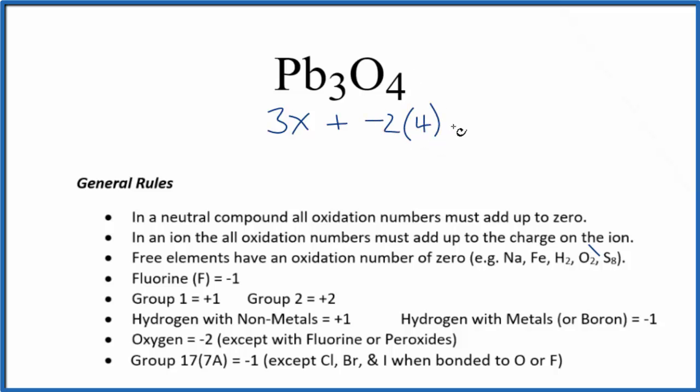So we'll have three lead, so 3x, plus oxygen - each one is minus 2, we have four of them - and we said all of that would equal zero since it's a neutral compound. So 3x minus 8 equals 0. Add 8 to both sides, 3x equals positive 8, then we'll divide both sides by 3 and we'll get x equals 8 thirds.